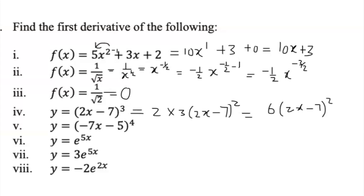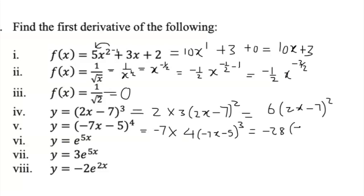For minus 7x minus 5 raised to the 4th, we use the chain rule. Differentiate the inside: minus 7x becomes minus 7, and the constant term is 0. Then carry the 4 in front, rewrite minus 7x minus 5, and subtract 1 from the power to get 3. Multiplying minus 7 times 4 gives minus 28. So the derivative is minus 28 times (minus 7x minus 5) cubed.